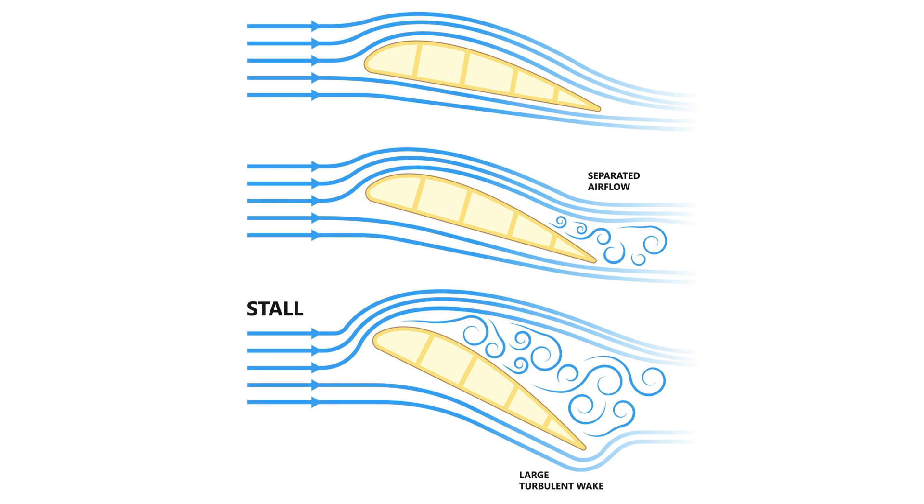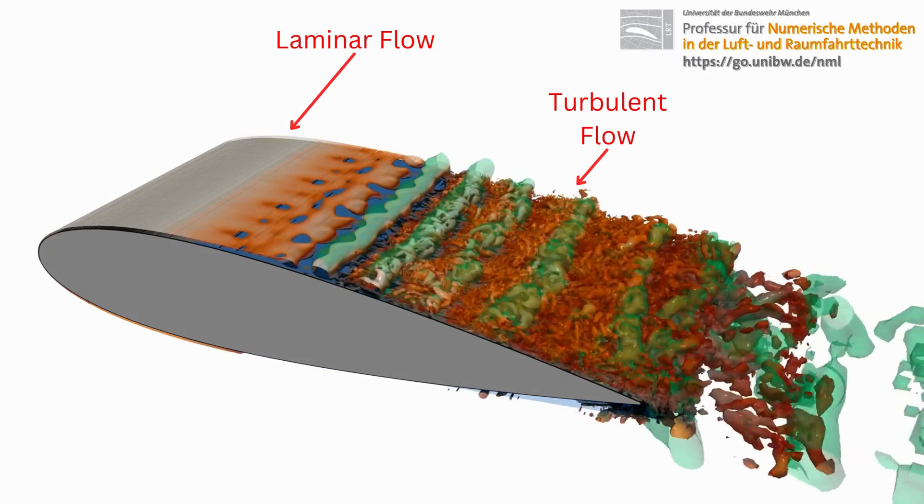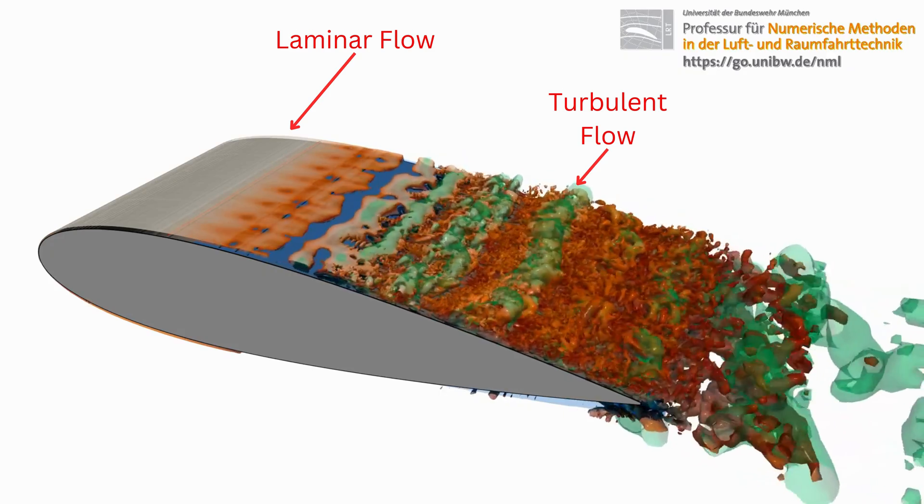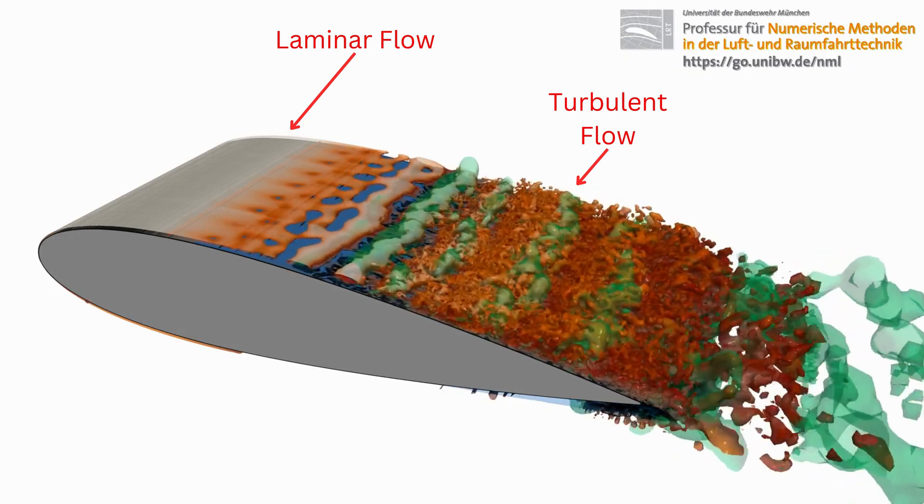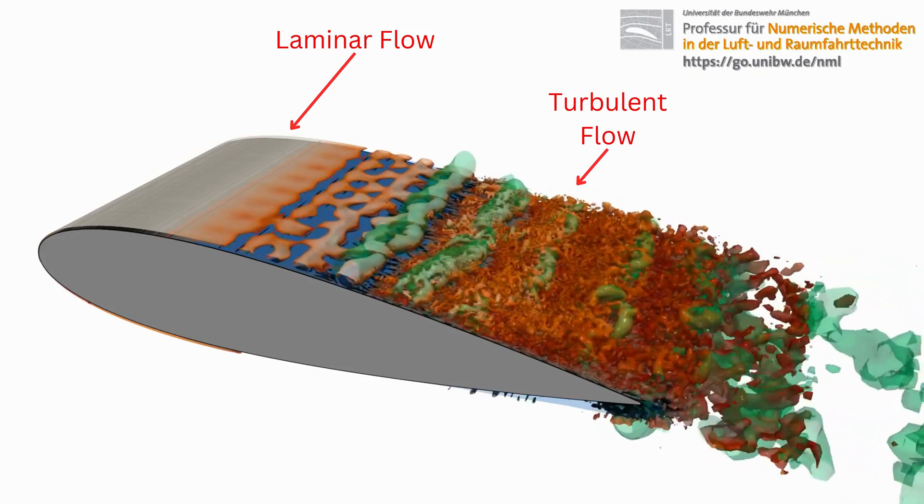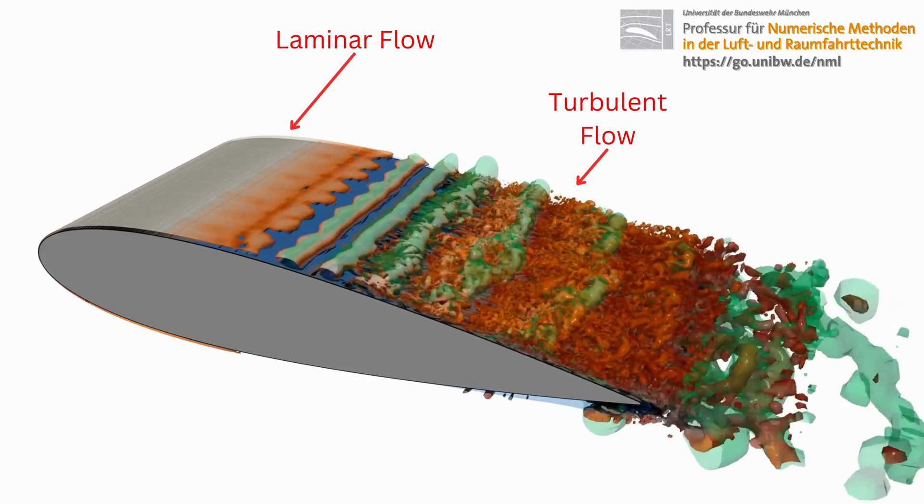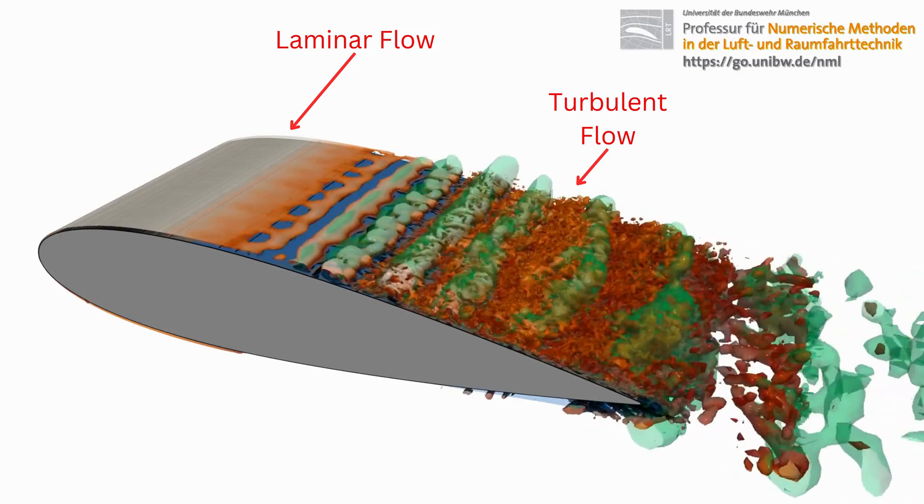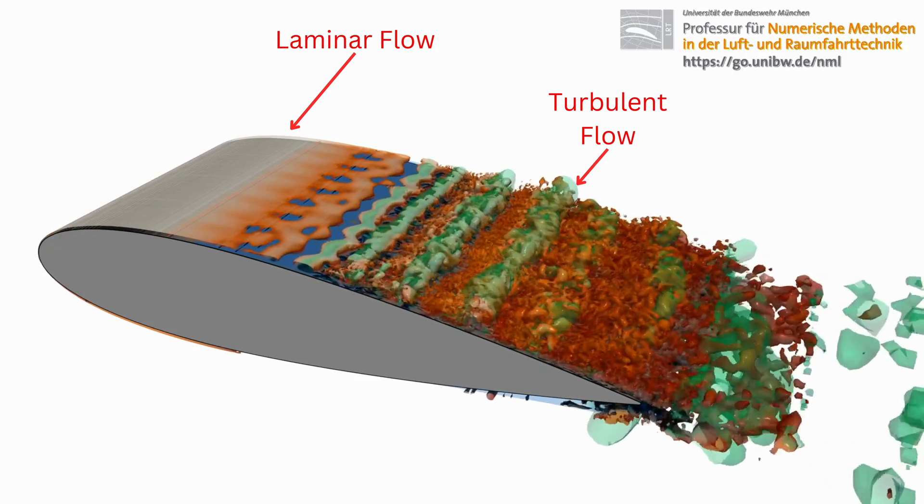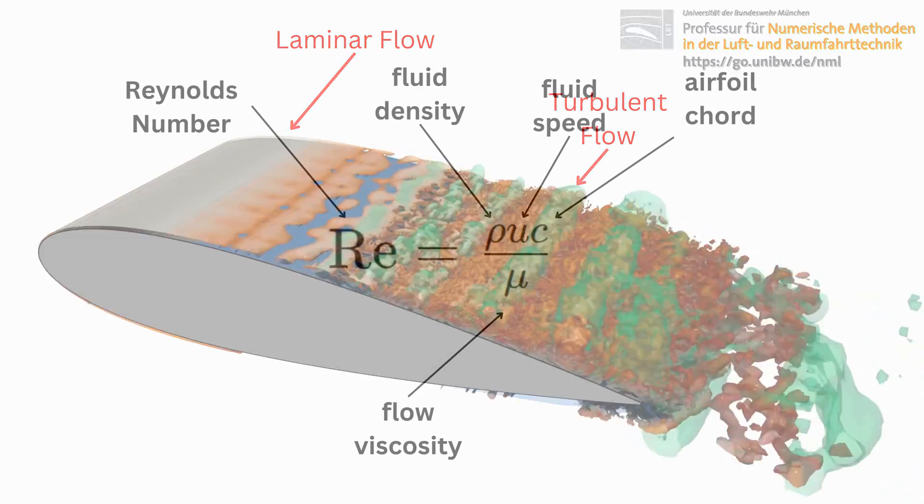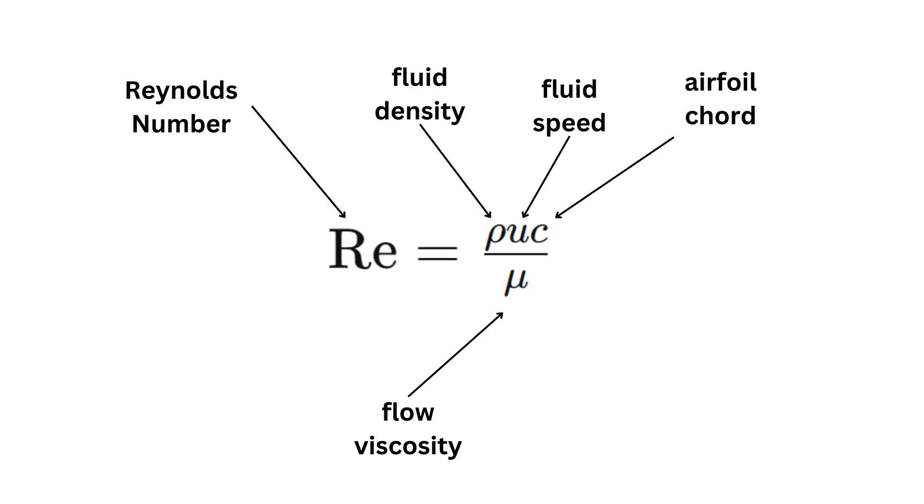The stall phenomenon happens when the airfoil angle of attack is high, causing the flow to separate from the upper surface and producing a sudden reduction in lift and increase in drag. Flow passing over a surface produces a boundary layer, which eventually turns the flow turbulent. Turbulence increases skin friction drag, but delays flow separation, potentially reducing form drag, and delaying stall to higher angles of attack. The Reynolds number is a value that captures how likely a flow is to be turbulent.